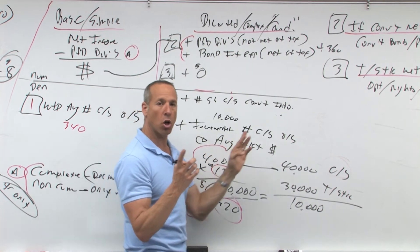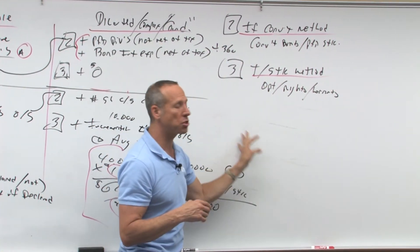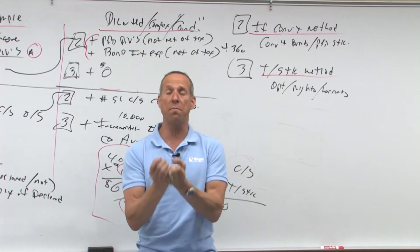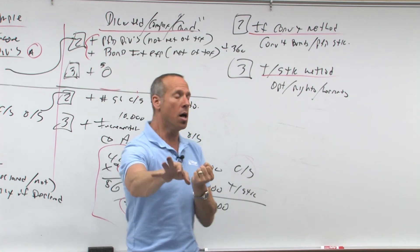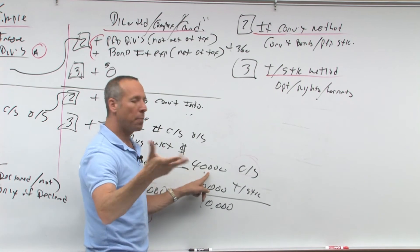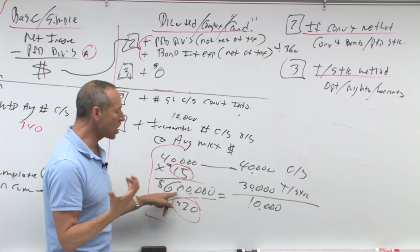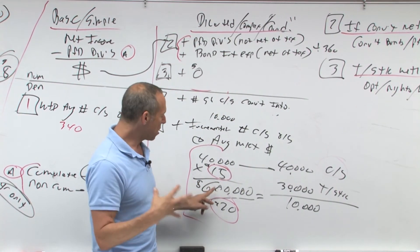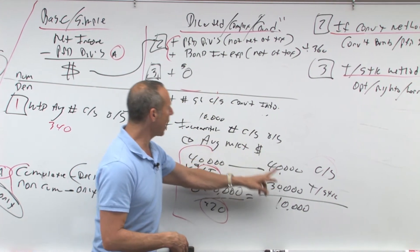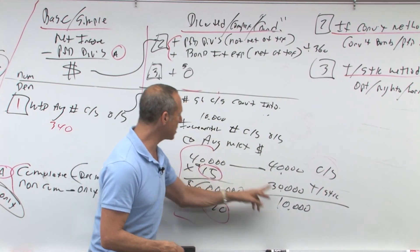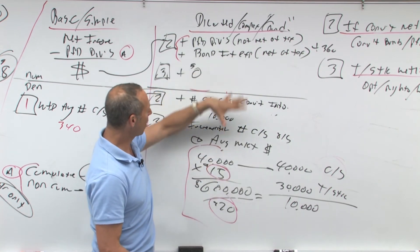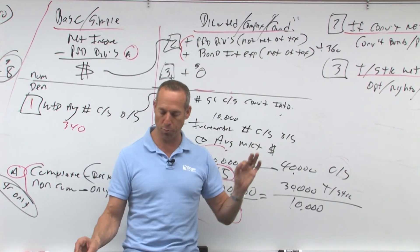The third method is called the treasury stock method for options, rights and warrants. What it says is theoretically if you exercised your option, right or warrant, you give me money. What do I do? I give you stock. Then, I want to minimize the dilutive effect. So I gave you 40,000 shares, but I'm going to then take that theoretical money, go out and buy back stock at the average market price. Then I'm going to buy fewer shares. So if I spent all the money, I've got zero left. What's left is the incremental number, which is 10,000 plus incremental number of common stock outstanding at average market price. Divide that, that's how you get your diluted earnings per share.